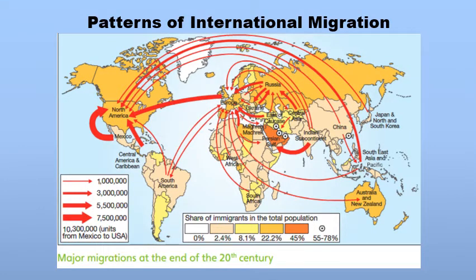This lesson starts with the first slide on page number 158. It tells you about the pattern of international migration during the last century. You can see that different countries have experienced people leaving from those areas, and some countries have witnessed people entering into those areas.